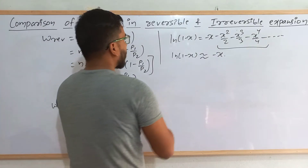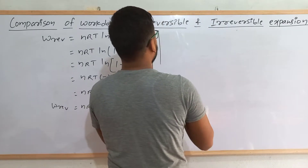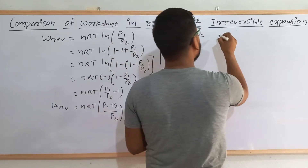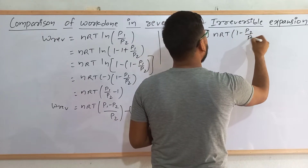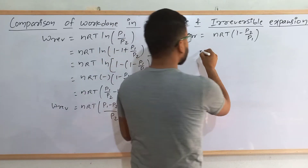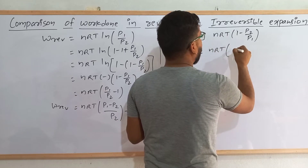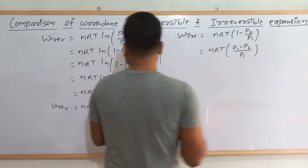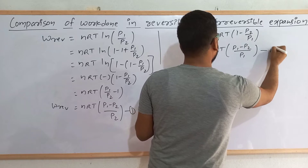Now let's see the work done in irreversible process. The work done in irreversible process has the mathematical form nRT(1 − p2/p1). This is the mathematical form of work done in the irreversible process. We can rearrange it to find the value nRT × (p1 − p2)/p1. Let's consider this equation number 2.